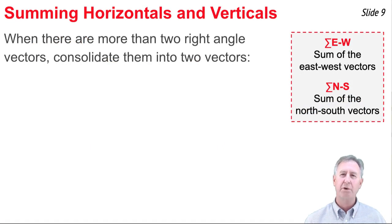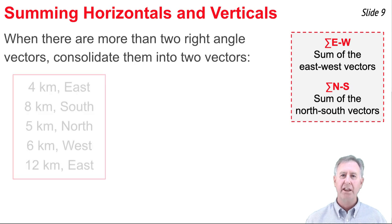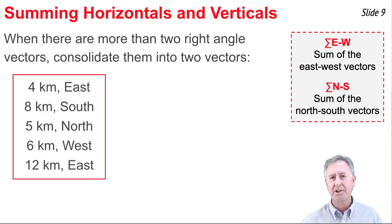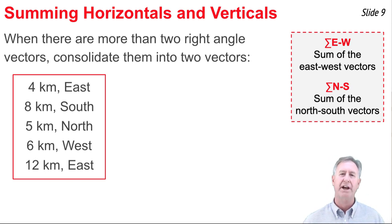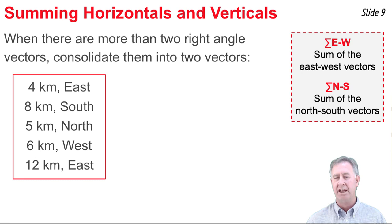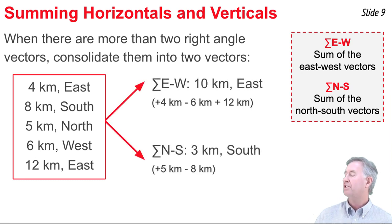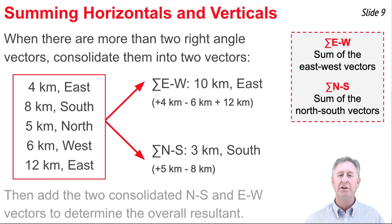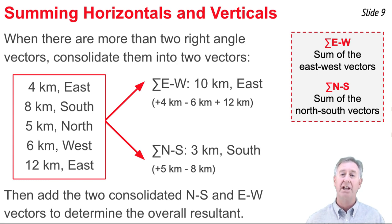Here's a quick trick for adding three or more right angle vectors, such as five vectors. The trick involves consolidating all north-south vectors and all east-west vectors into just two vectors. Assign west and south vectors a negative value. For example, three east-west vectors and two north-south vectors might consolidate to 10 kilometers east and 3 kilometers south. Then you only need to find the resultant of those two consolidated vectors — much simpler.